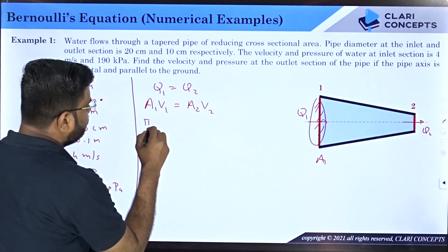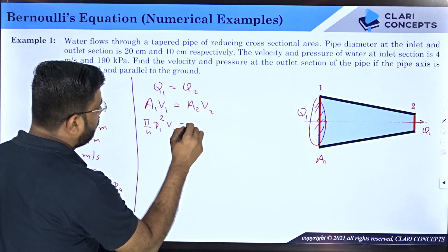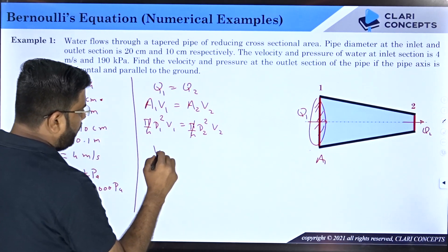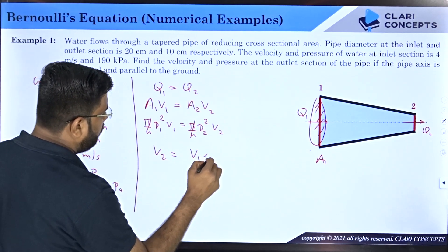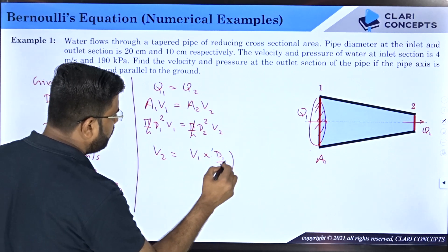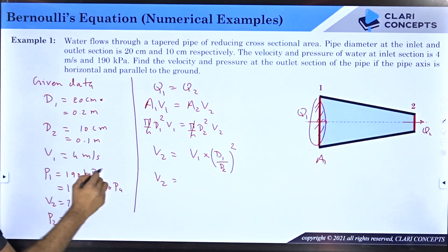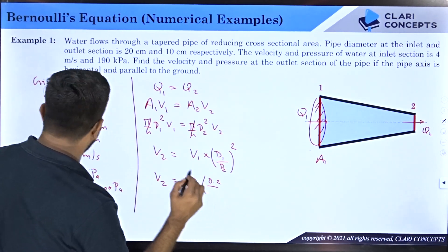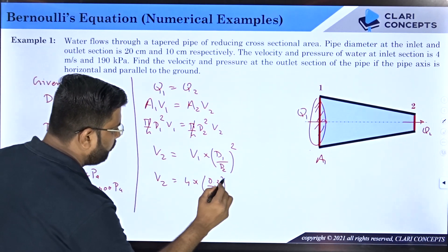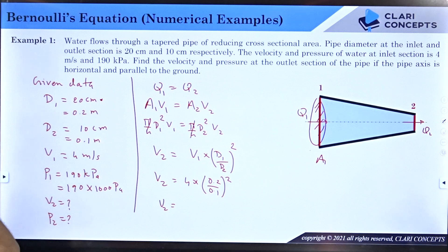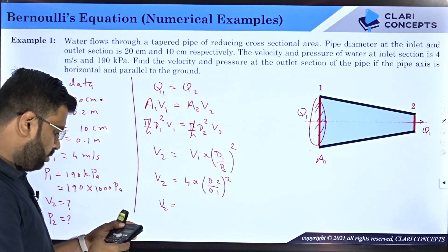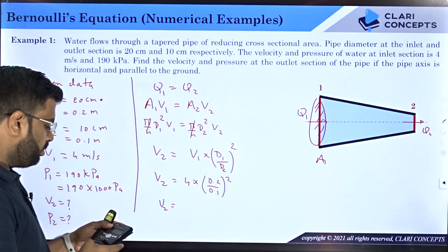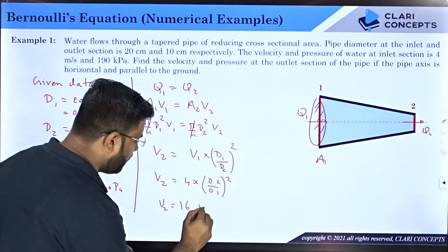Setting A1 V1 equal to A2 V2: (π/4) D1² × V1 = (π/4) D2² × V2. Pi over 4 cancels, so V2 equals V1 × (D1/D2)². Substituting V1 = 4 m/s, D1 = 0.2 m, D2 = 0.1 m gives V2 = 16 meters per second.